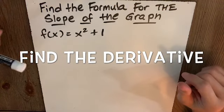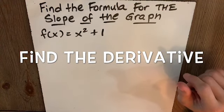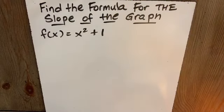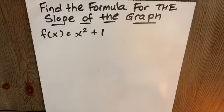So using that idea of finding the derivative equation, the slope of the graph at any point x, let's do this example. f of x is x squared plus 1. Find the formula for the slope of the graph.